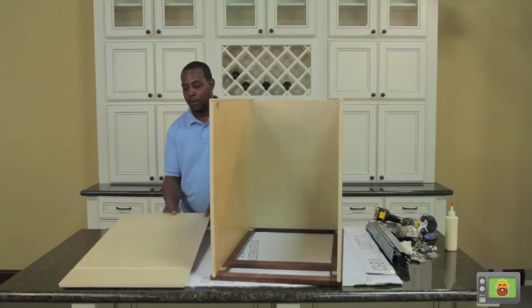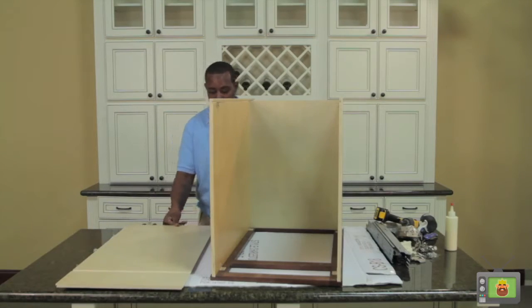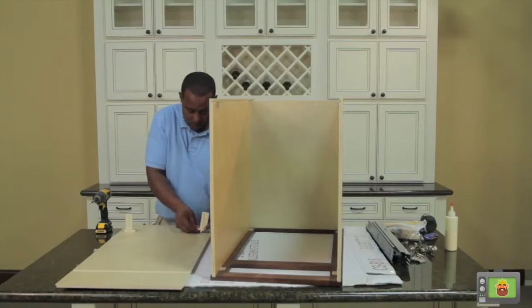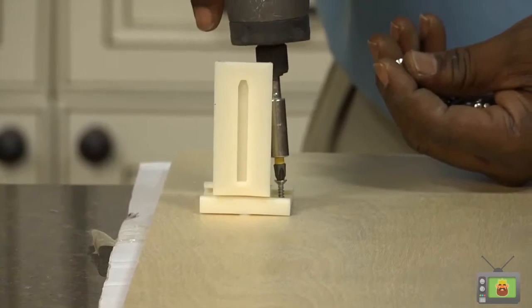The last step in completing the cabinet box is to install the back panel. First, install the glide supports to the panel using the pre-drilled hole and silver flush mount screws.